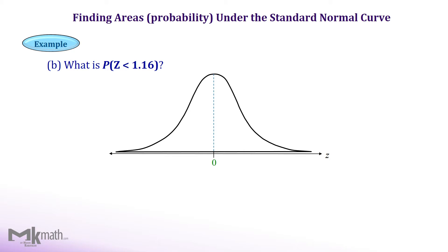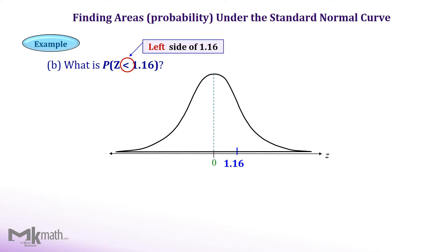Let's take a look at the next example. Mark the given z-score, 1.16, on the normal distribution. Mark it on the right side of the center since it is a positive value. Once we locate the z-score, then read the direction. We read it as less than 1.16, so we need to find the area to the left of z equal 1.16.